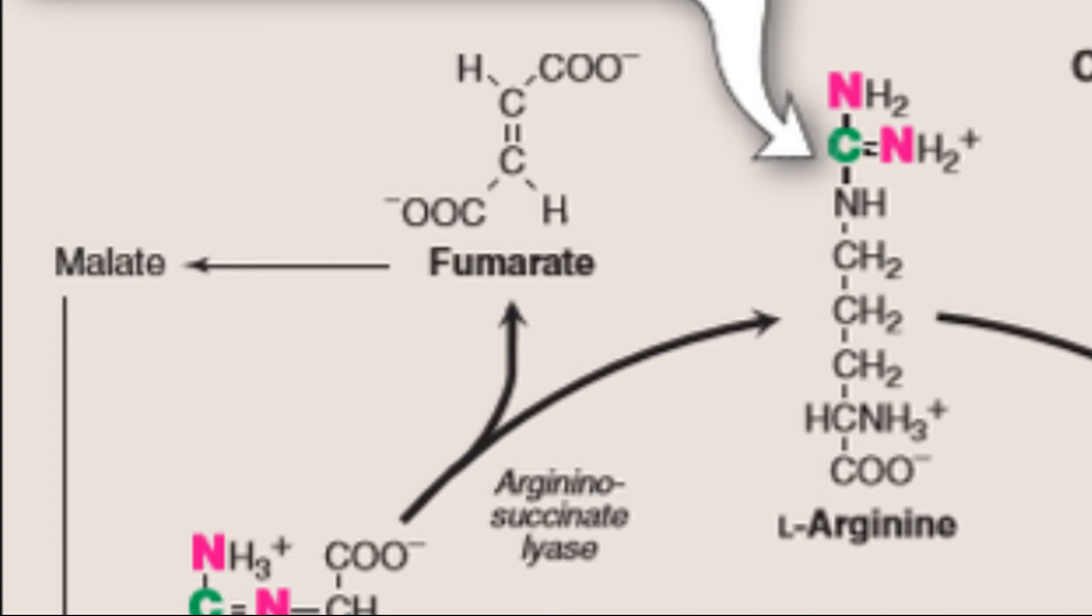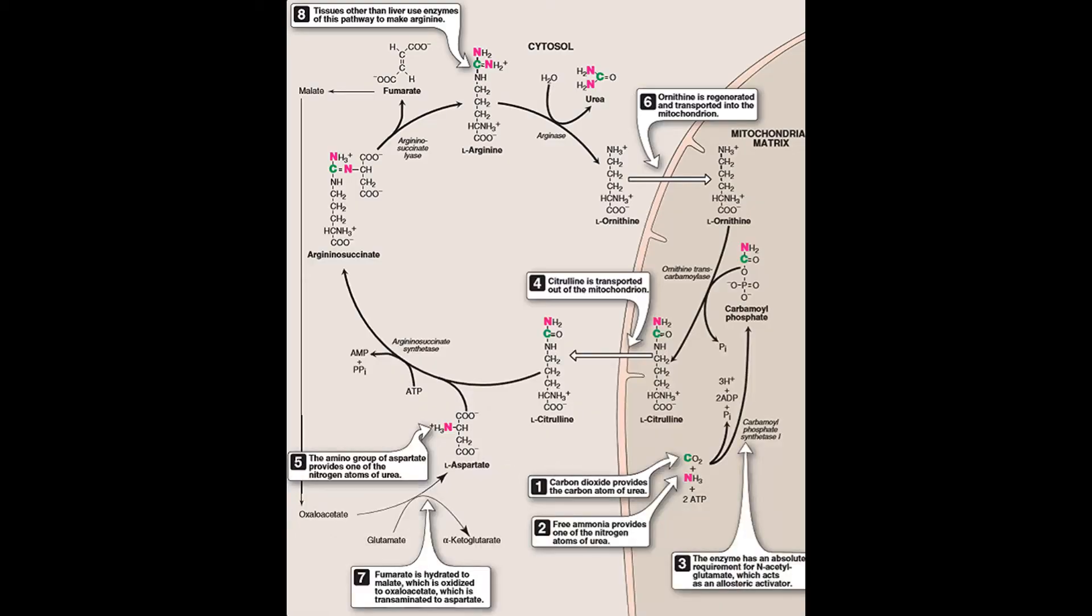The arginine formed by this reaction serves as the immediate precursor of urea. Fumarate produced in the urea cycle is hydrated to malate, providing a link with several metabolic pathways. For example, malate going into the citric acid cycle.